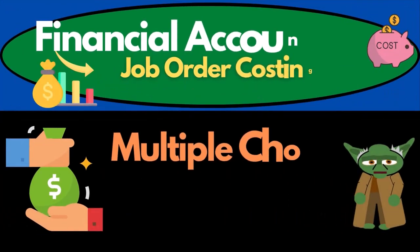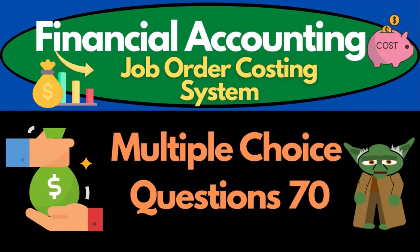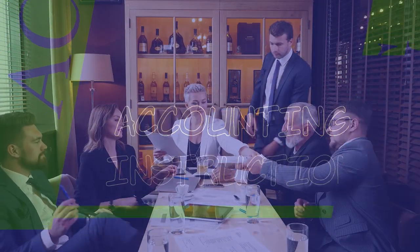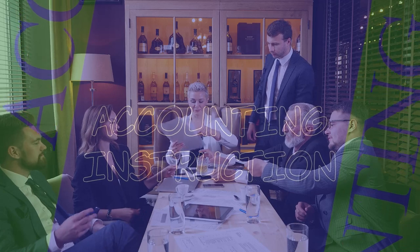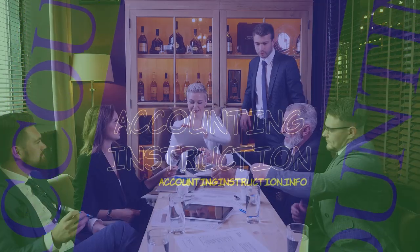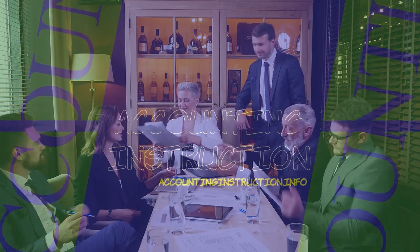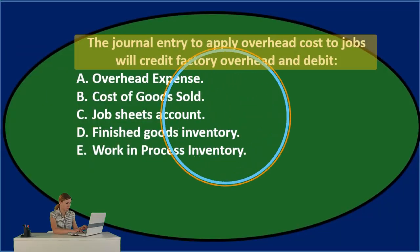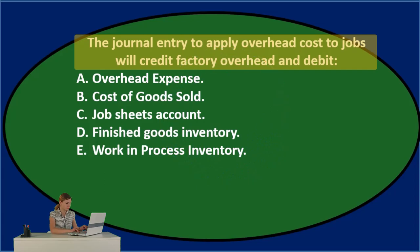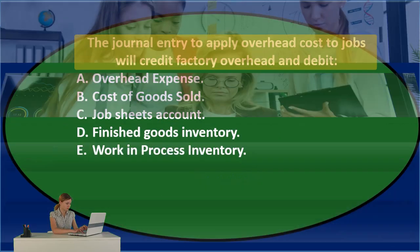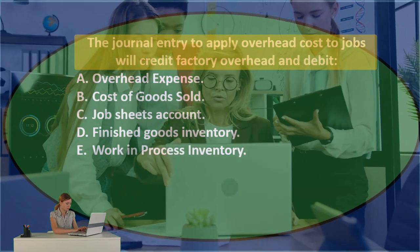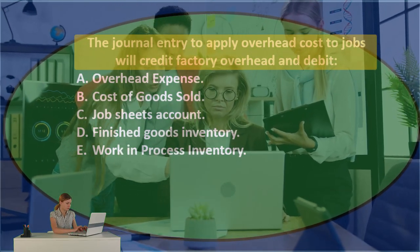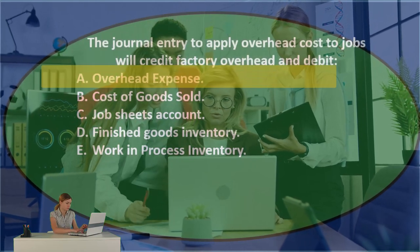In this presentation, we're going to take a look at multiple choice questions related to a job cost system. First question: the journal entry to apply overhead costs to jobs will credit factory overhead and debit either A...